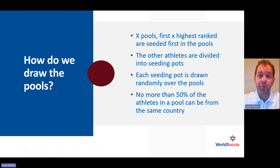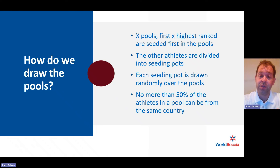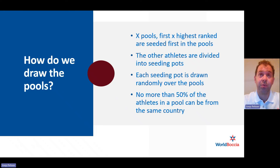It's relatively simple. When we have X pools, the first X highest ranked athletes are seated first in the pool. So if there are four pools, the first four athletes in the ranking are seated on top of the four pools. Then we divide the other athletes into seeding pots. So if there are four pools, the athletes ranked five to eight go in seeding pot two, and the next four athletes in seeding pot three, and so on until we have all the athletes in a seeding pot. Then each seeding pot is drawn randomly over the pools. There is one important rule: we cannot have more than 50 percent of the athletes in a pool from the same country.